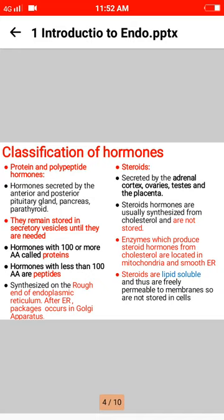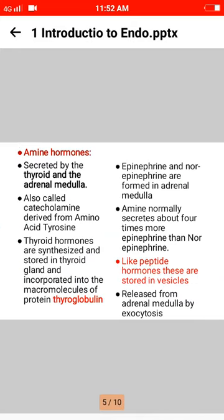Amine hormones are secreted by the thyroid and the adrenal medulla, also called catecholamines, and are derived from the amino acid tyrosine. Thyroid hormones are synthesized and stored in the thyroid gland, incorporated into the macromolecules of the protein thyroglobulin.